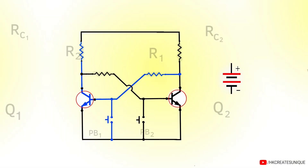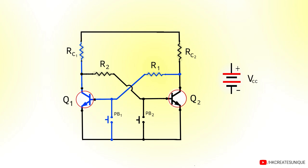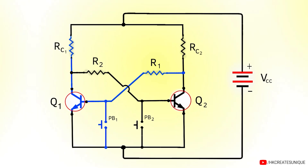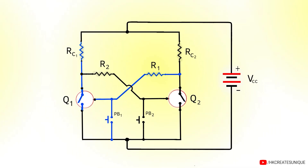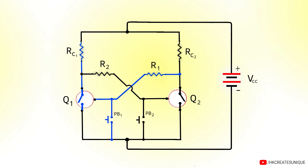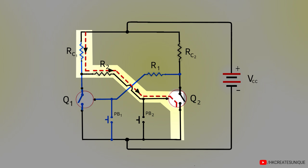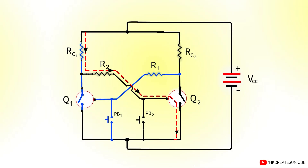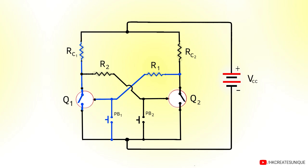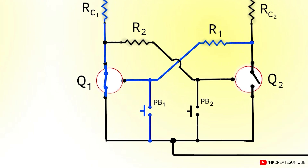Let's first name each component. When the voltage source VCC is connected, both transistors Q1 and Q2 are initially off. Current flows to the base of Q1 and also to the base of Q2. Both transistors will try to activate, but no two transistors are exactly the same — one will always activate faster than the other. Let's assume Q1 gets activated first.